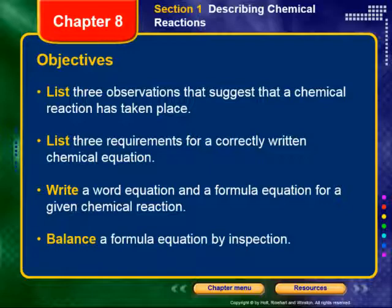You have four different objectives here. The first one is to list three observations that suggest that a chemical reaction has taken place. Second, list three requirements for a correctly written chemical equation. Third, write a word equation and a formula equation for a given chemical reaction. And lastly, balance a formula equation by inspection.